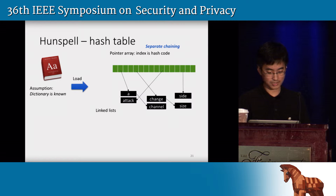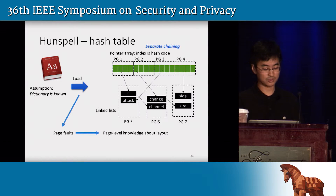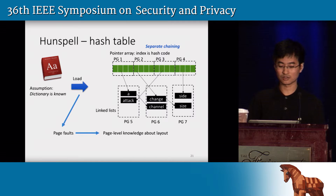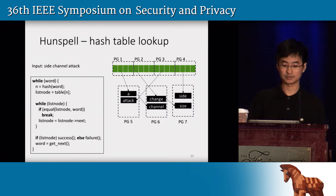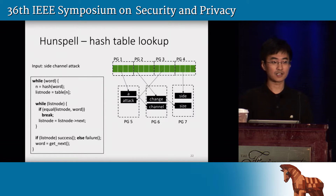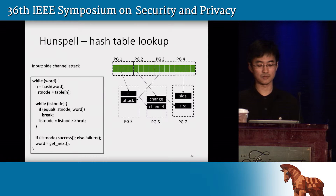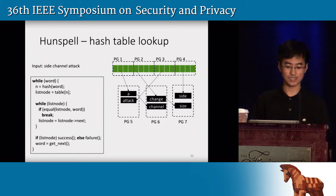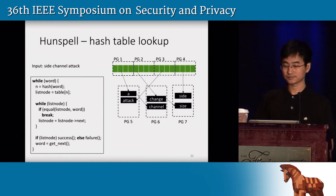The first step of our attack is to track the page faults of the loading phase of the dictionary. Based on these page faults, we can learn some page-level knowledge about the memory layout of the hash table. When Hunspell checks the spelling of the input file, for every input word, it performs a hash table lookup. For each input word, it computes the hash to locate a linked list, then traverses the linked list trying to find a matching word. If a match is found, it reports success; otherwise, it reports failure.